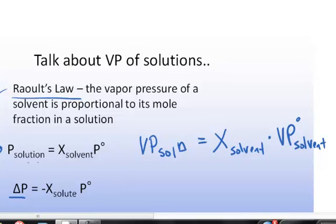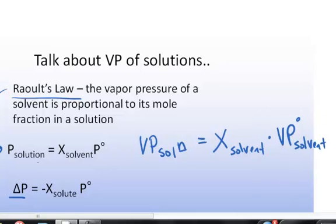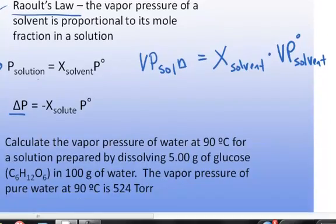If you want to figure out the change, you can just calculate the vapor pressure of the solution and subtract from it the pure vapor pressure. Or you can get to it directly by calculating the mole fraction of the solute instead of the mole fraction of the solvent. You would do whatever is easiest, depending on what the question is.